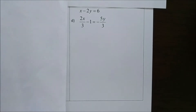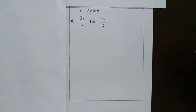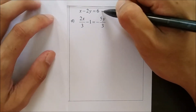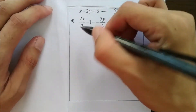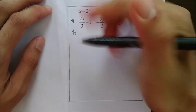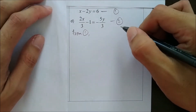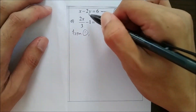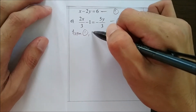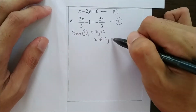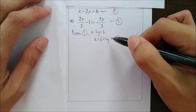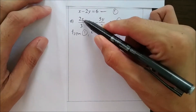The last question: x minus 2y equals 6, and 2x over 3 minus 1 equals negative 5y over 3. Let equation 1 be x minus 2y equals 6, and equation 2 be 2x over 3 minus 1 equals negative 5y over 3. From equation 1, I take x as the subject — moving negative 2y gives x equals 6 plus 2y. This will be equation number 3. I'll substitute this into equation number 2.